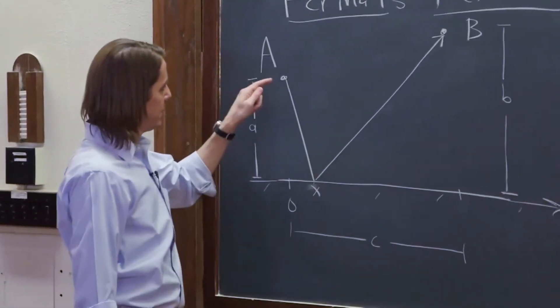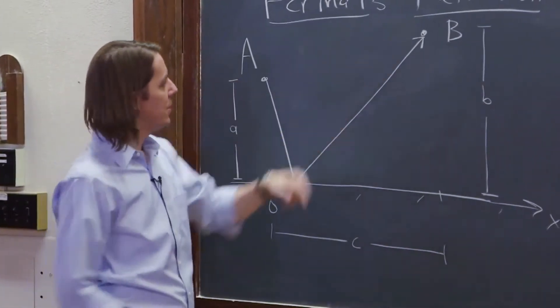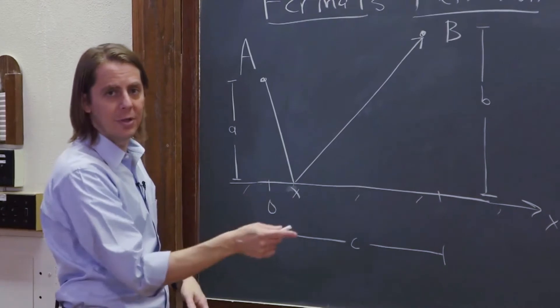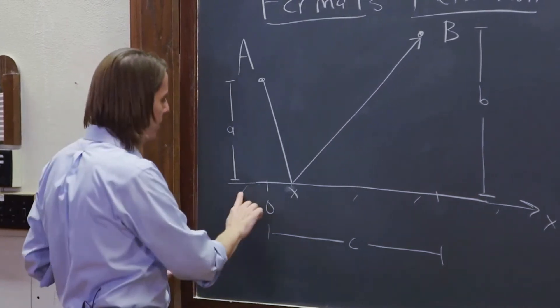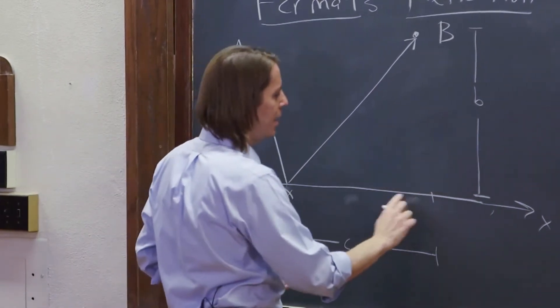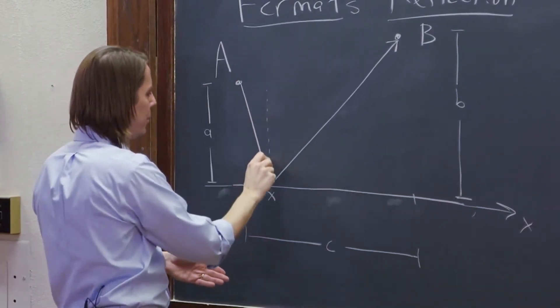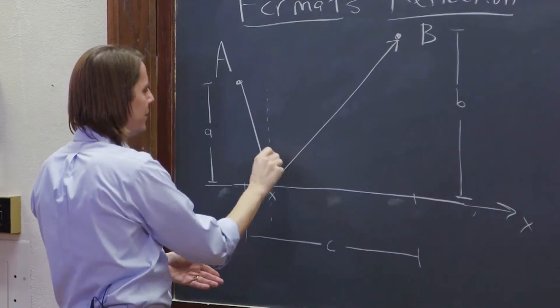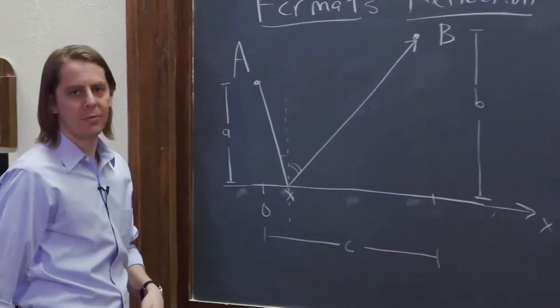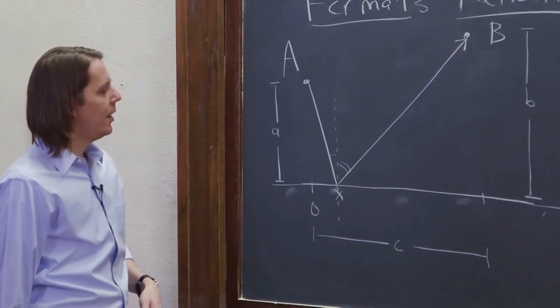And the idea is to get the light from here to here, it could reflect anywhere on the surface. And we're just asking ourselves, where does it happen to reflect? Because as you can see, as we change where it reflects, that's going to change the angles. So if I draw a normal here, you have the angle of incidence, and the angle of reflection like that.